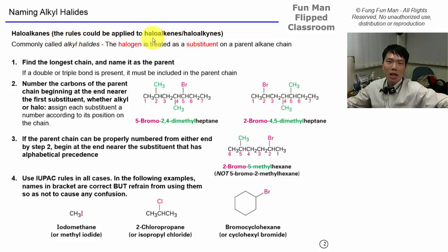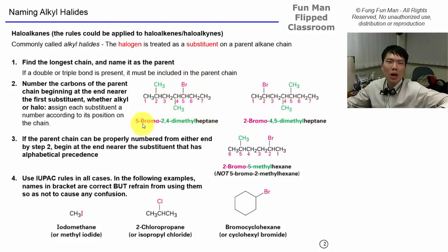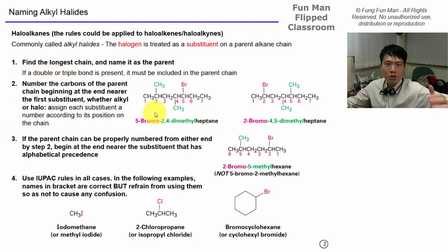For the nomenclature, to name the alkyl halide, these rules can also be applied to haloalkenes or haloalkynes. First, find the longest chain. For naming, I encourage you to look at examples and come up with your own understanding. The rules do not change, but it's easier to briefly review the rules and then go straight to the examples to learn faster.